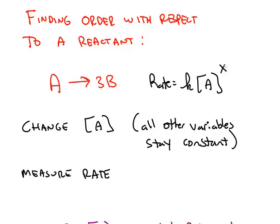The order X is not equal to the coefficient. The order has to come from experimental evidence. If we had a mechanism and we knew experimentally which step was slow, that's one example. What we're going to look at in this video is another example.